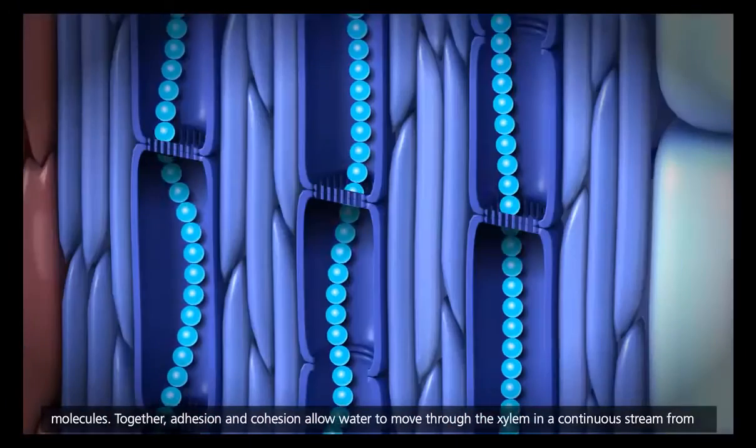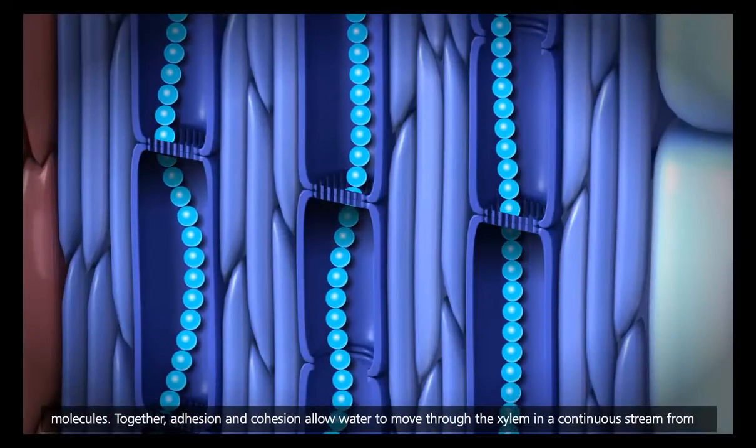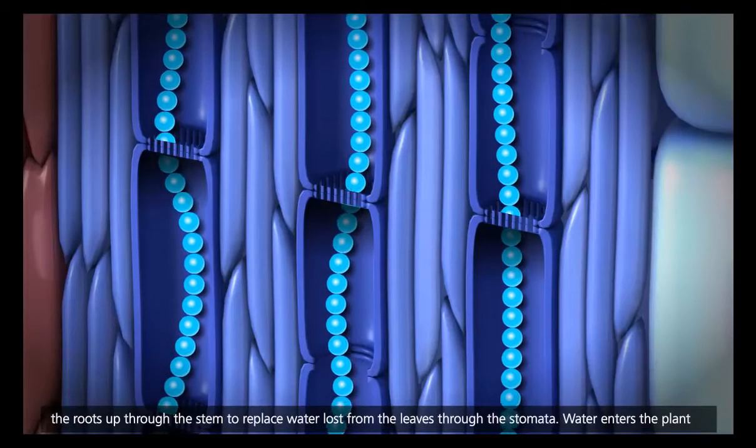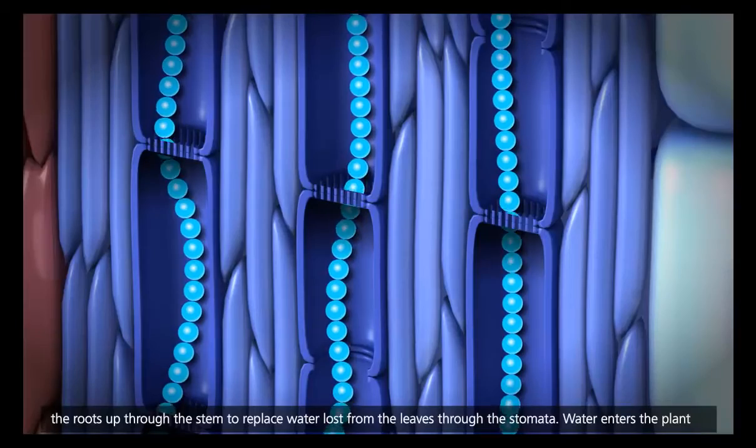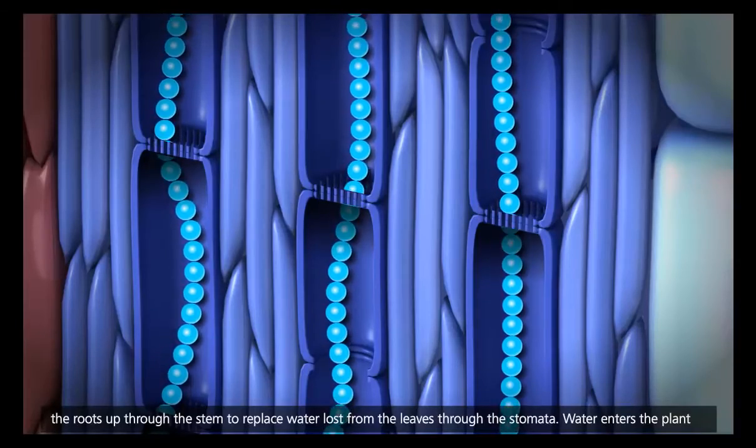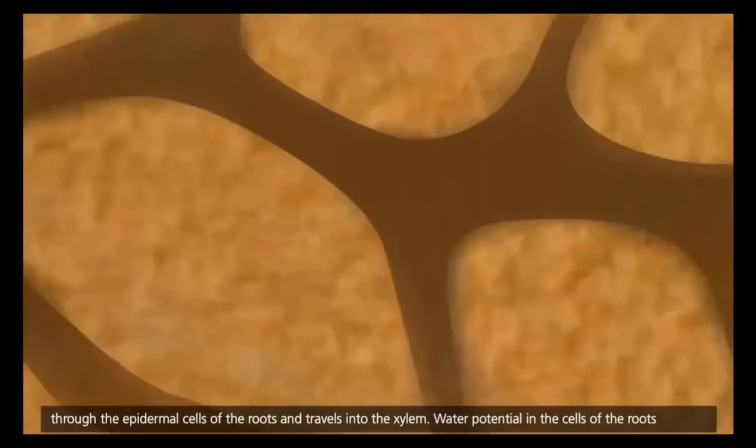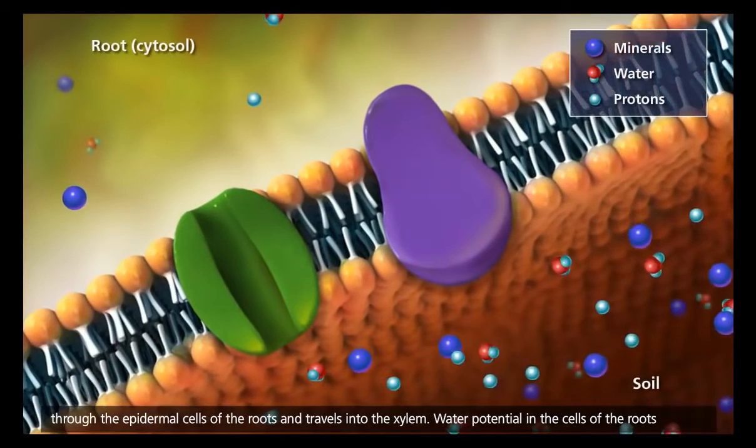Together, adhesion and cohesion allow water to move through the xylem in a continuous stream, from the roots, up through the stem, to replace water lost from the leaves through the stomata. Water enters the plant through the epidermal cells of the roots and travels into the xylem.